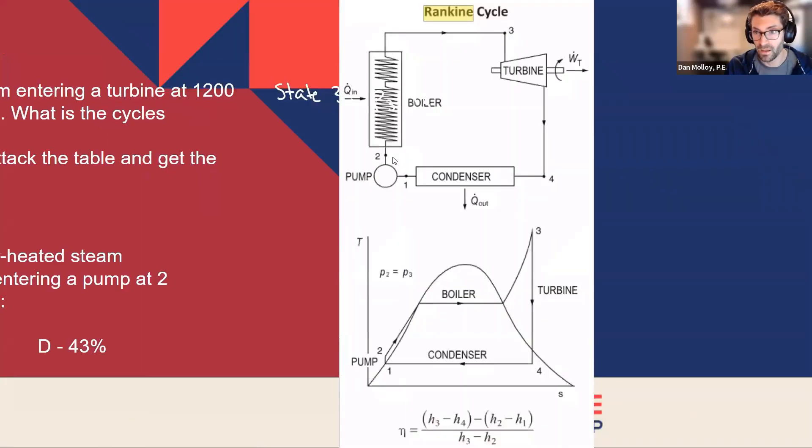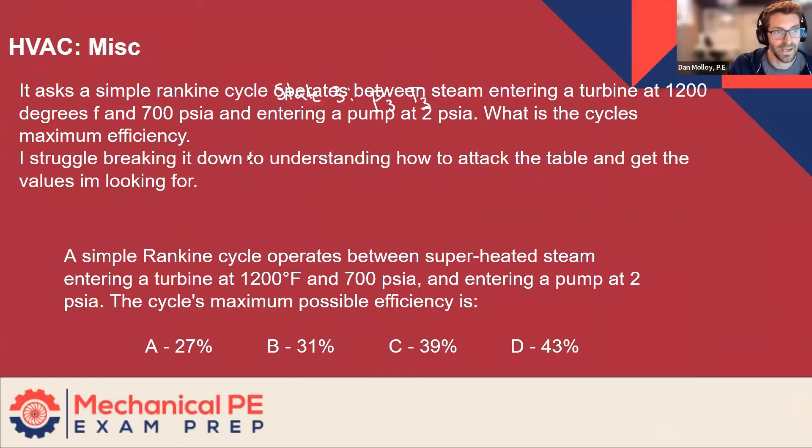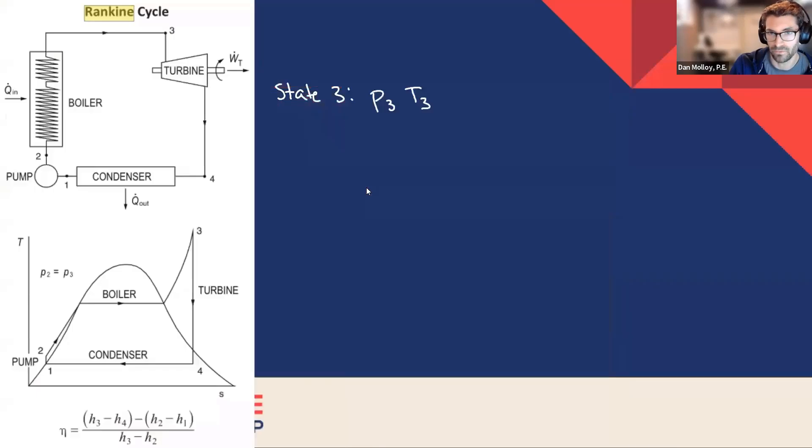We've got 1200 F and 700 PSIA. Can anybody tell me where I'm going to find information about that state? What table should I use? Probably the superheat. It's probably superheat. So how did you know that? Just because it's getting to the turbines, typically it's superheated. And then also the high pressure. Yeah. Agree.